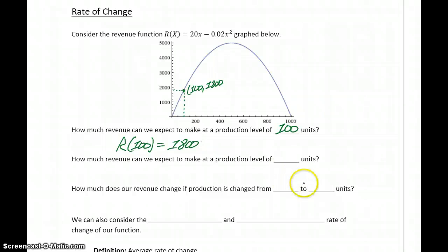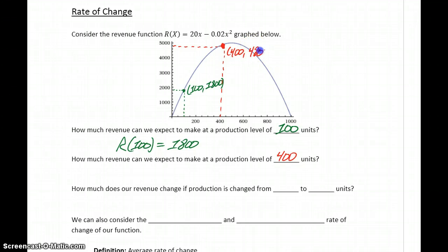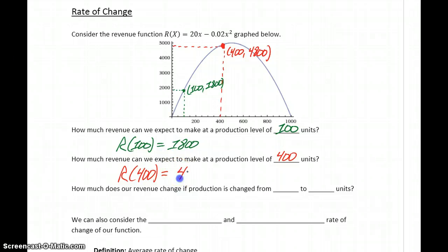Now we want to answer the question: what would happen if we increase production to 400 units? We could take that value of 400 and plug it into our function, or reading this off the graph, we can trace up to our function value. Either way, what we should come up with is the point (400, 4800) — a function value of 4800. So R of 400 equals 4800, meaning at a production level of 400 units we have a revenue of $4,800.